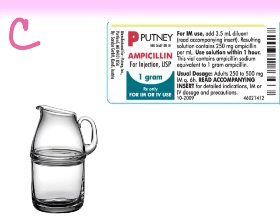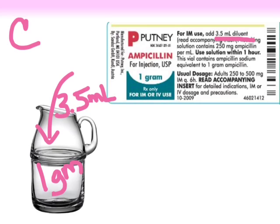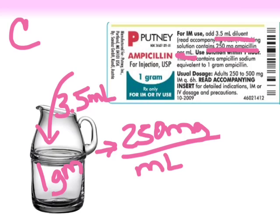Now we go to C — concentration. My label says that there's one gram of medicine in here, and it says that I should add 3.5 milliliters of diluent. So I have my one gram of solute, I add 3.5 milliliters of diluent, and the label tells us that this new solution will be 250 milligrams of ampicillin per milliliter. There's my concentration, and the unit on the bottom has a one in front of it — can't get any smaller than that.